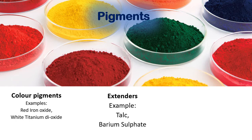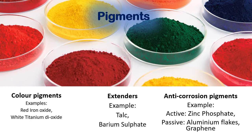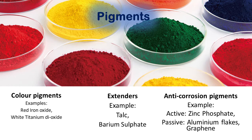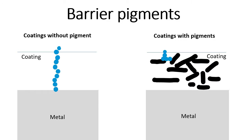Extenders also improve mechanical properties like toughness. Anti-corrosion pigments improve the corrosion resistance of a coating. They can be active or passive — active anti-corrosion pigments provide protection through certain chemical reactions, while passive anti-corrosion pigments provide protection by acting as a barrier to oxygen and moisture, thereby enhancing the barrier property of a coating.